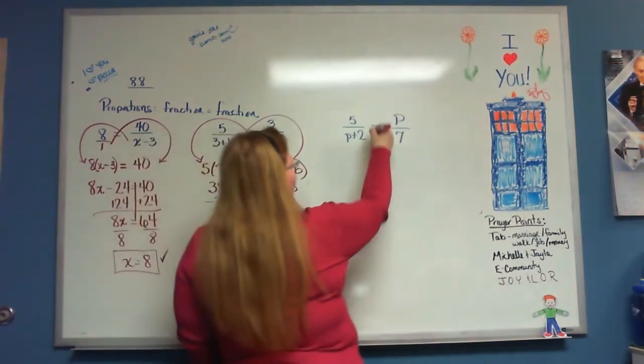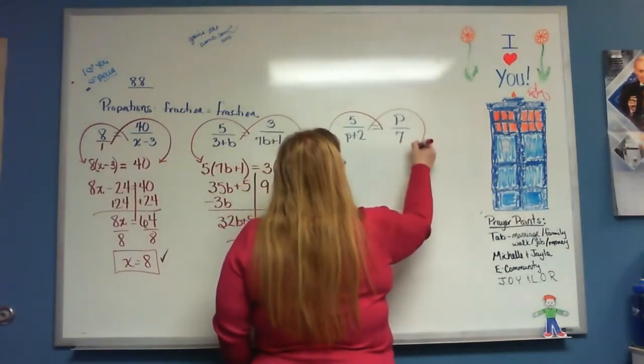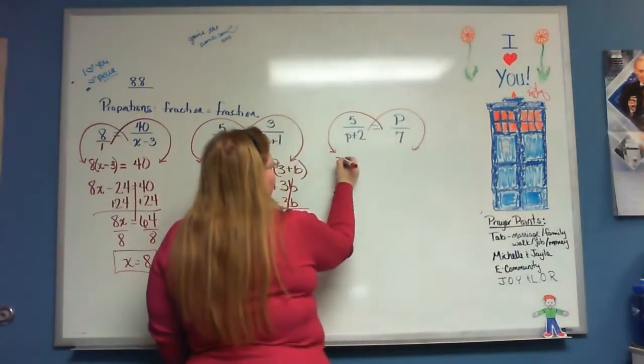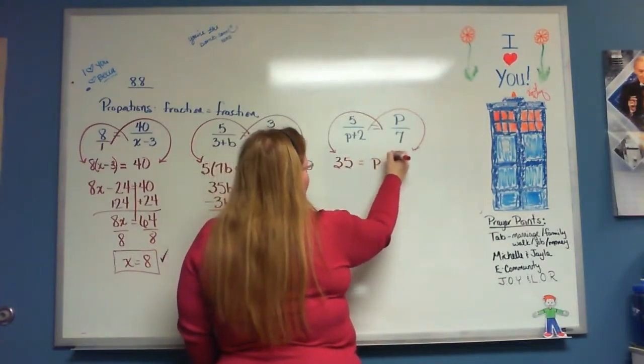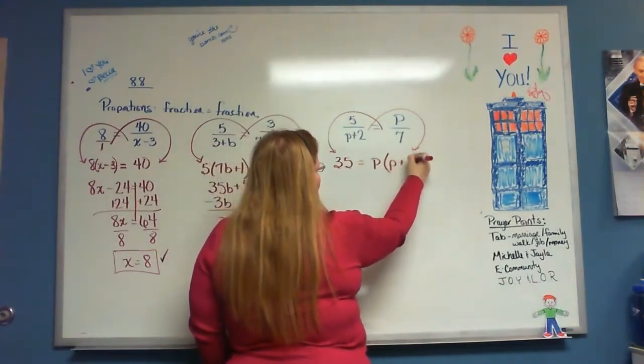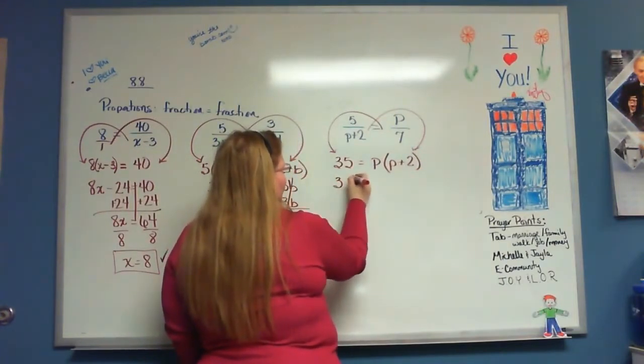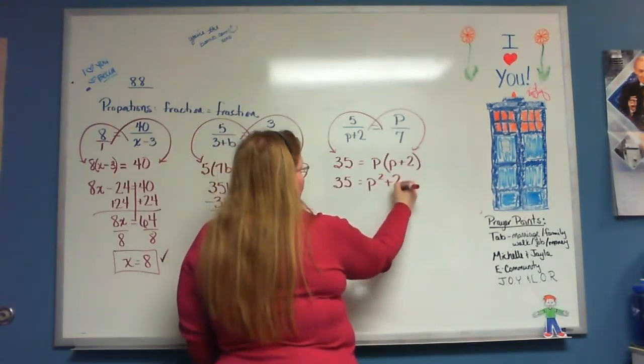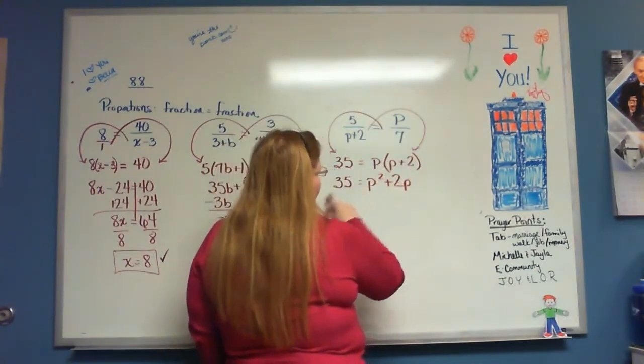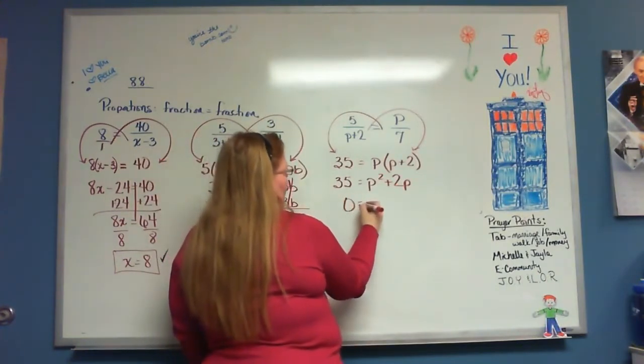Okay. 35 is equal to p times p plus 2. 35 is equal to p squared plus 2p. Got a square in there. So we're going to have to move the 35 over and get everything equal to 0.